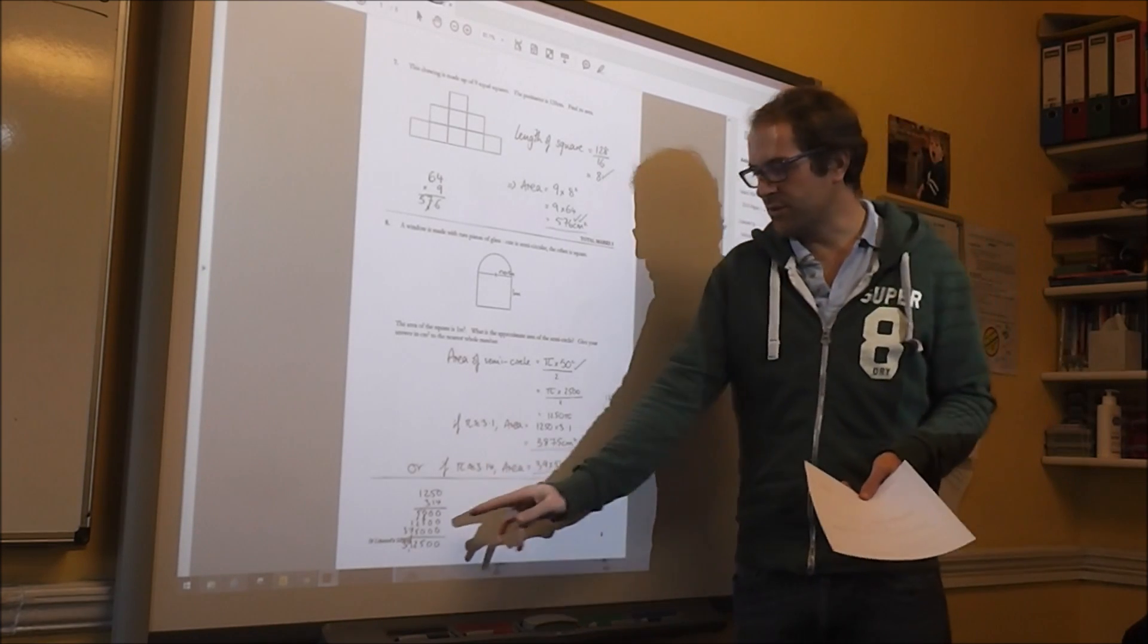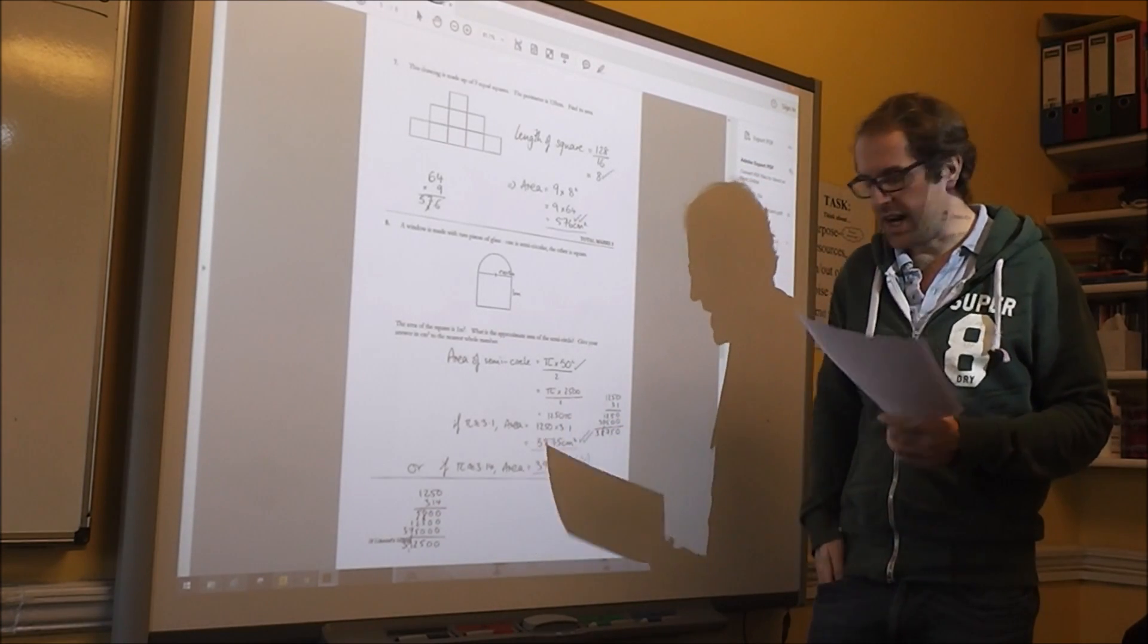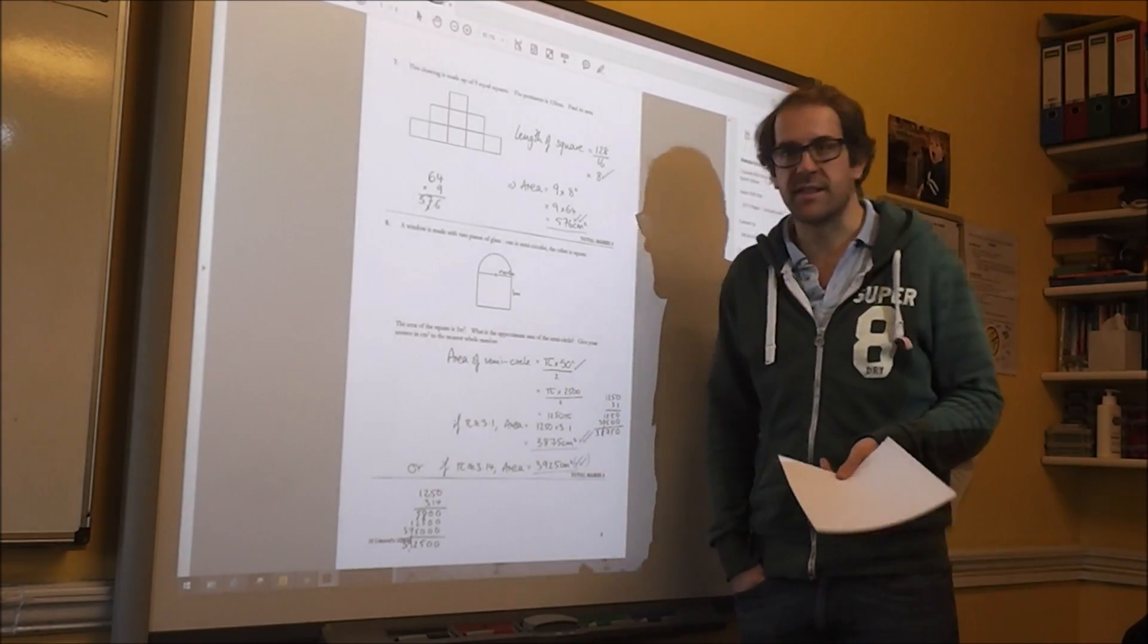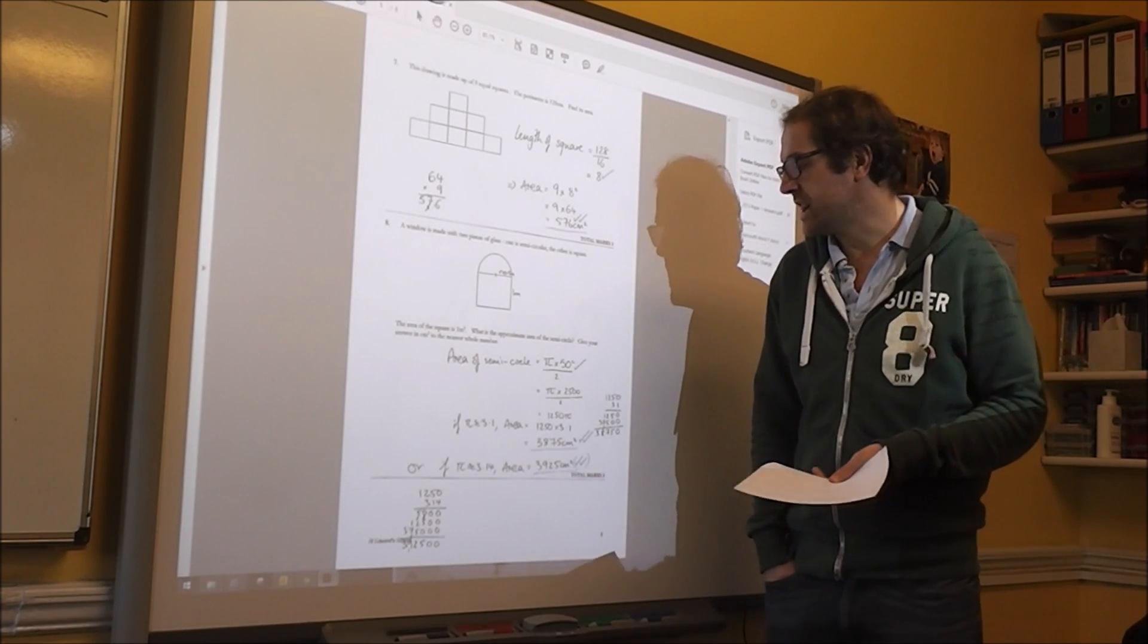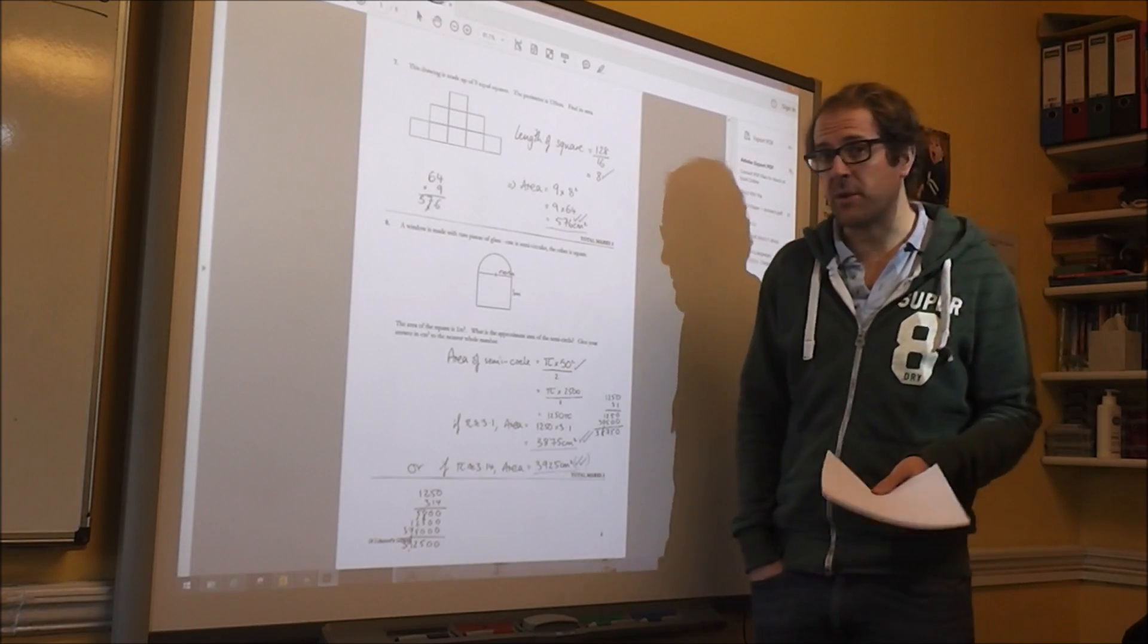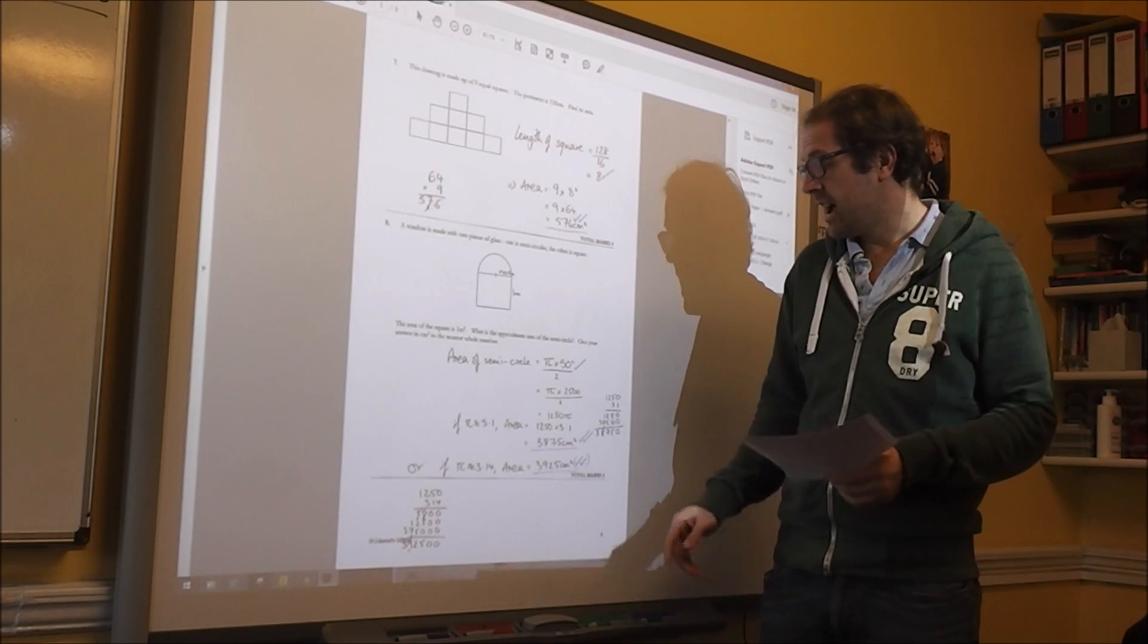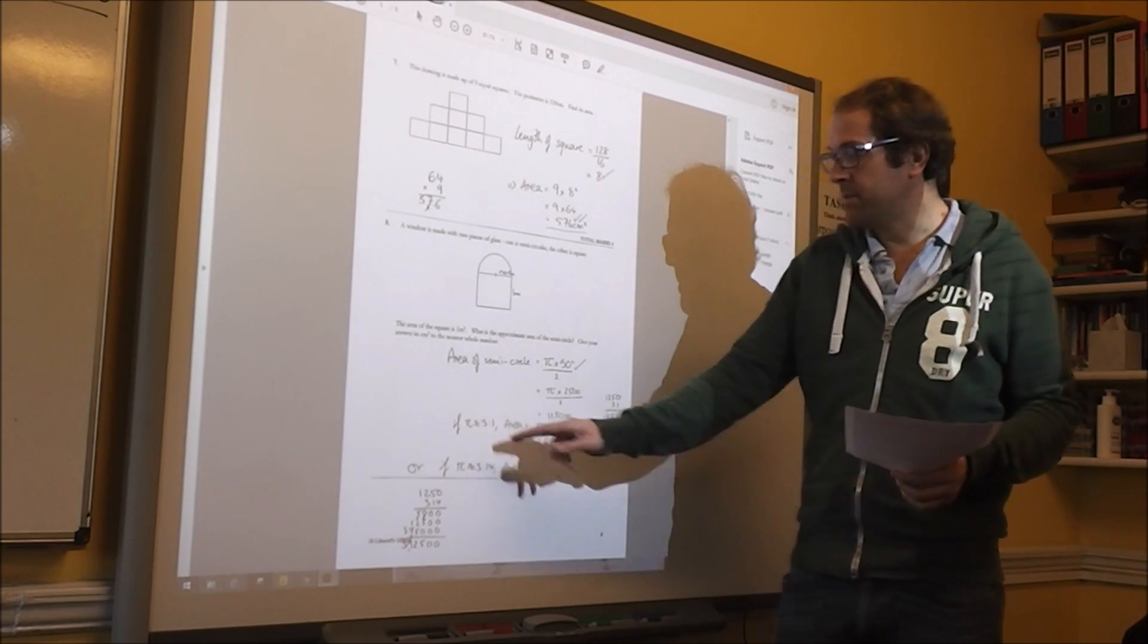If pi is approximately 3.14, you get 3,925. Or you could even say pi is approximately 3, in which case it would be 3,750. It doesn't really matter which one you use, I don't think. But just make sure you make your assumption clear what you're assuming pi to be.